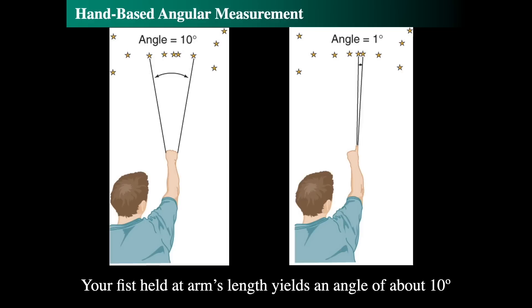We can make very small angular measurements. Since your pinky is about a degree, the Sun and the Moon both are only about half the size of your pinky held at arm's length. They're almost exactly the same size, and that's why we can have total solar eclipses.